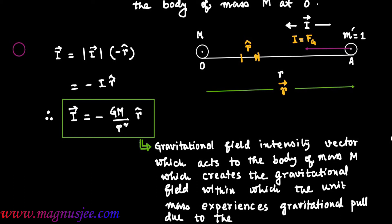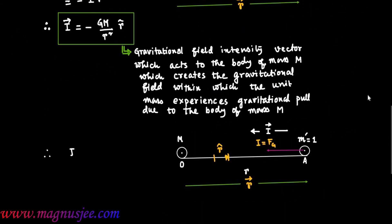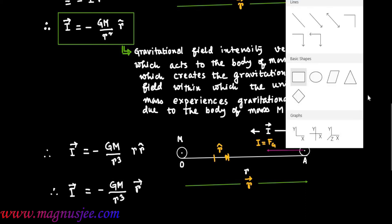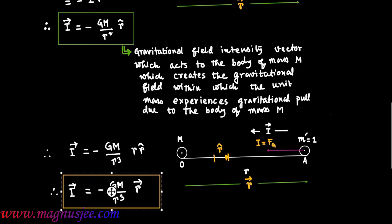This is the gravitational field due to the body of mass capital M. The negative sign indicates that gravitational field intensity vector I acts in the opposite direction of the distance vector. Therefore, vector I = −GM / R³ · vector R. This is the expression of gravitational field intensity vector in terms of distance vector.